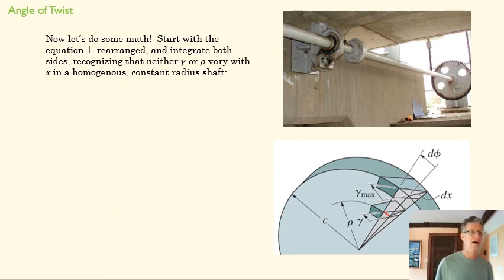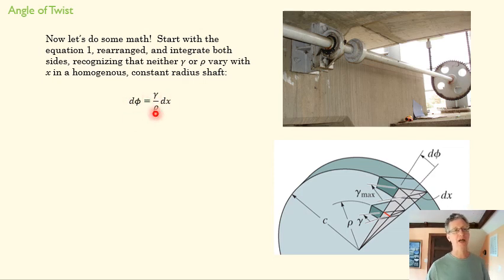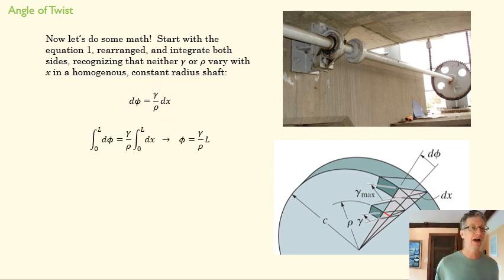Let's do some math. We'll start with equation one, rearrange it, keeping d phi on the same side and moving everything else to the other side. We're going to integrate both sides of this equation from zero to L, so we integrate d phi as well as dx. We know that d phi integrated over the length L is just going to give us our angle of twist.